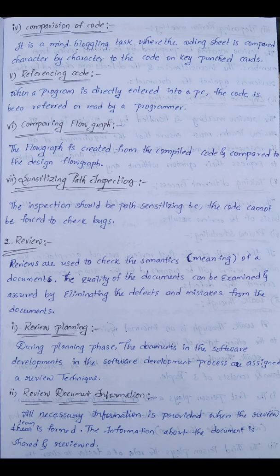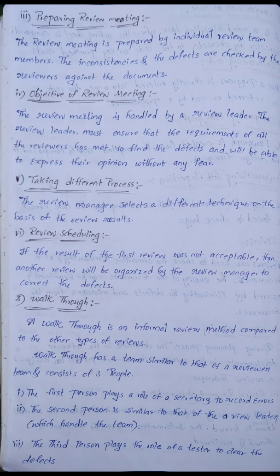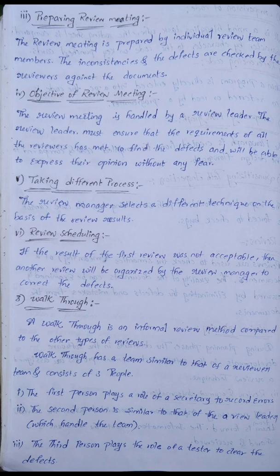All necessary information is provided when the review team is formed. The information about the document is shared and reviewed. Mistakes in the documentation will be rectified. A review meeting is prepared by individual review team members, who check inconsistencies and defects against the document.